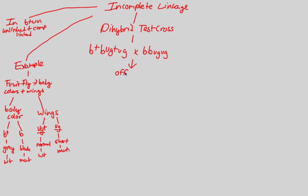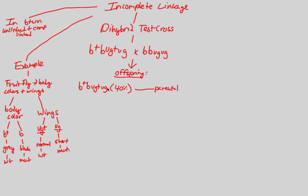Now let's look at the offspring — it's always about the offspring in genetic scenarios because they tell you everything. We end up with B-plus B and VG-plus VG. Remember what that looks like? That looks like a parental genotype — it's exactly the same as one of the parents. About 40% of the offspring in this situation end up looking like a parent, so they are parental.